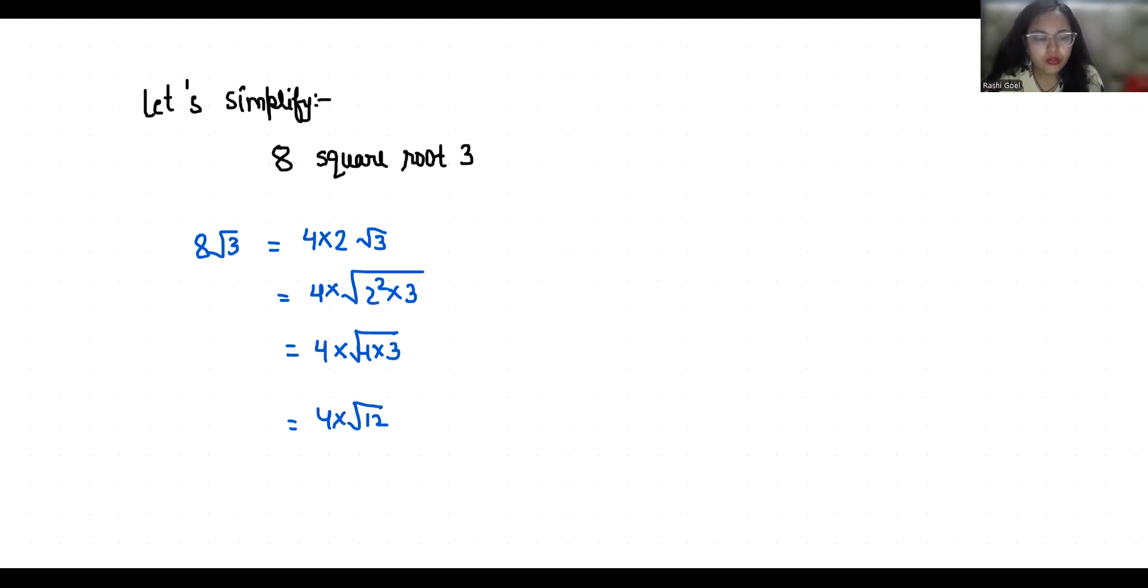Or you can find the decimal approximation. So 8√3 as 8 × 1.732, as the value of √3 is approximately 1.732. So when we multiply it, we get 13.856.